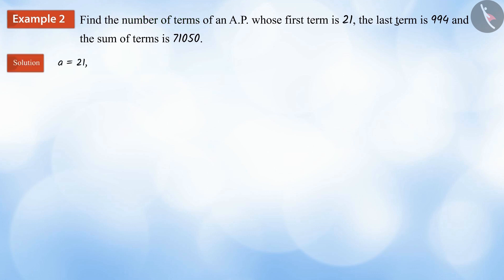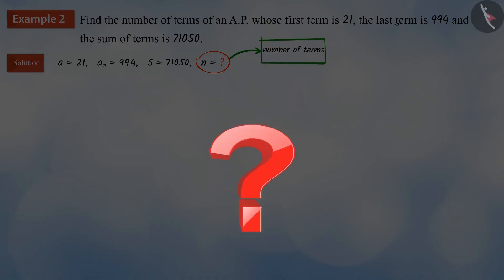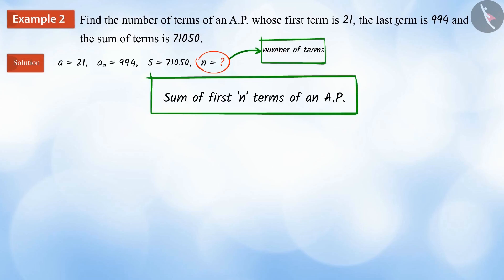As per the question, the first term of the arithmetic progression is a, the last term is a_n and the sum of all the terms of the arithmetic progression is s. With the help of which, we have to find the total number of terms n of the arithmetic progression. Can you tell what we need to do for this?